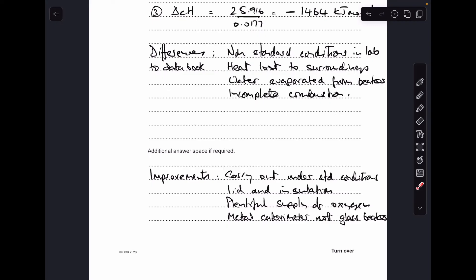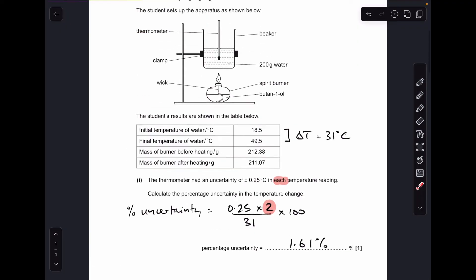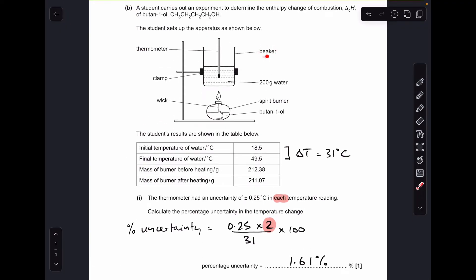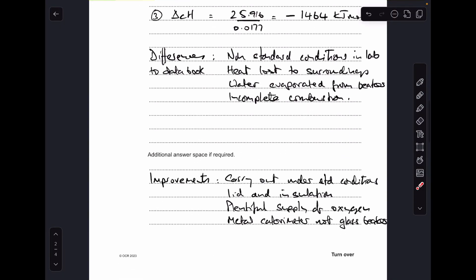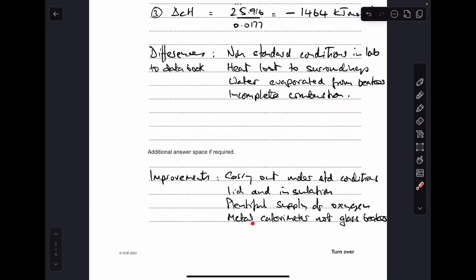And just finishing off with some improvements. So I'm kind of flipping what I've said up here. So carry out under standard conditions. Use a lid and insulate the beaker. Plentiful supply of oxygen. And it does mention in the diagram, it just says the word beaker, doesn't it? It doesn't say that it's glass or anything. So I'm kind of just assuming that that's a glass beaker. So therefore, a metal calorimeter would be better than a glass beaker.